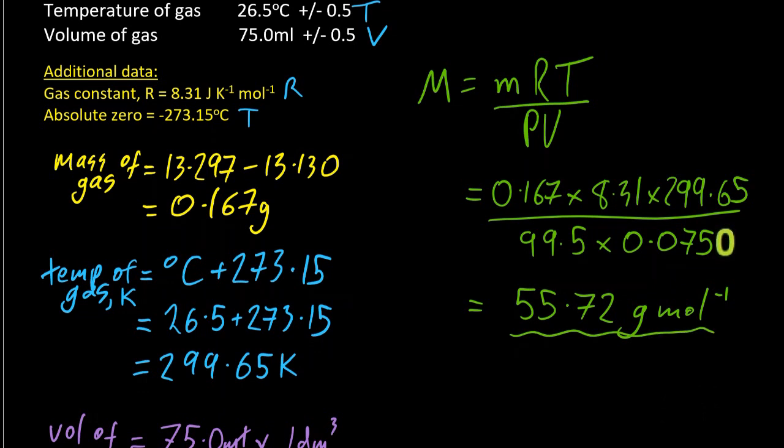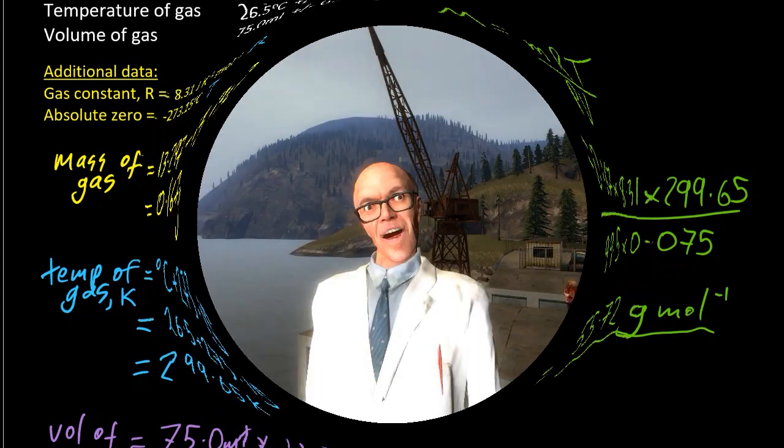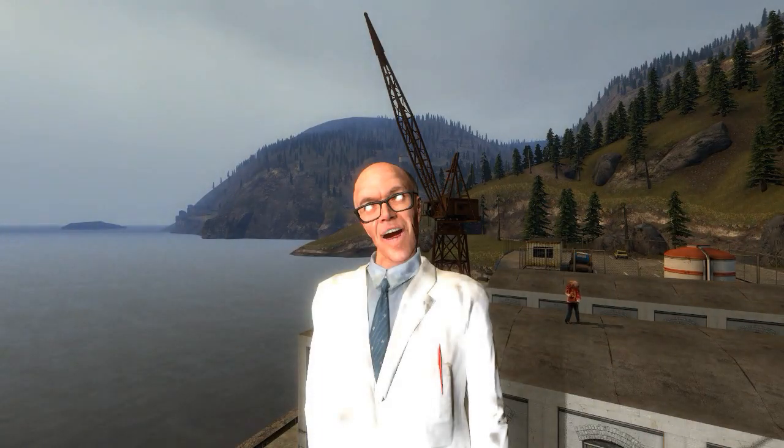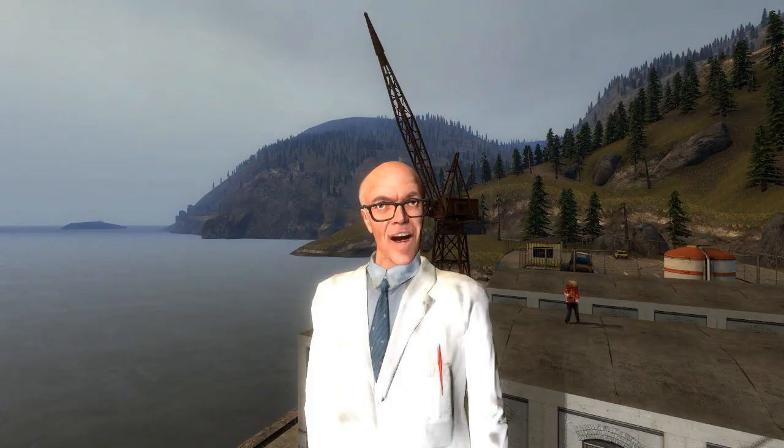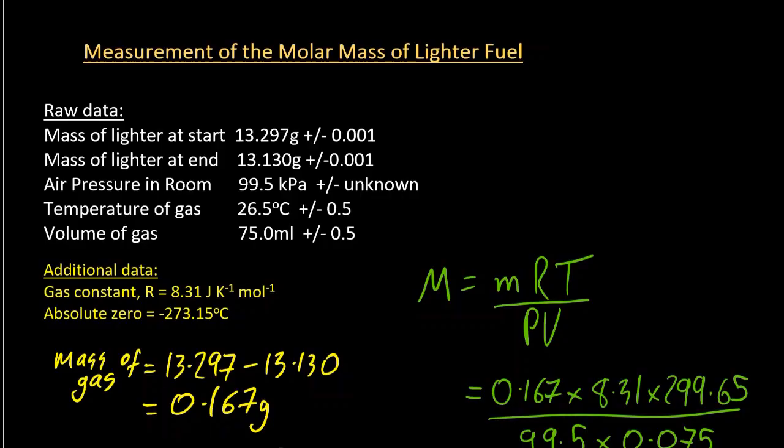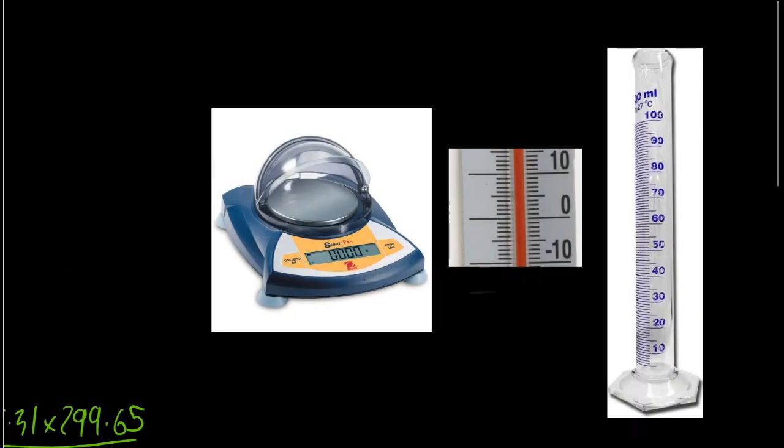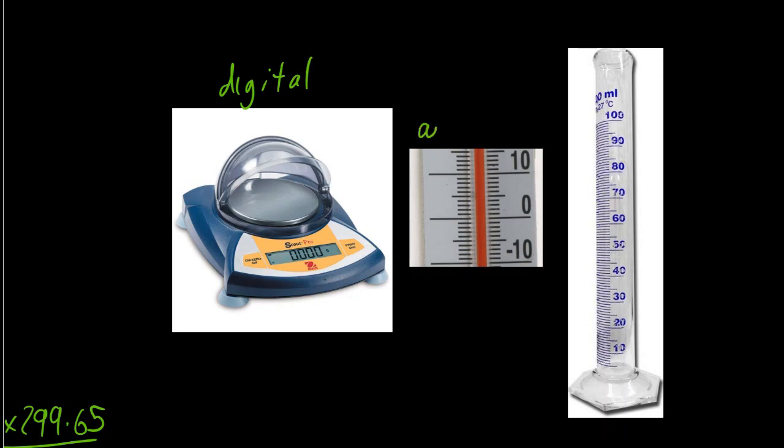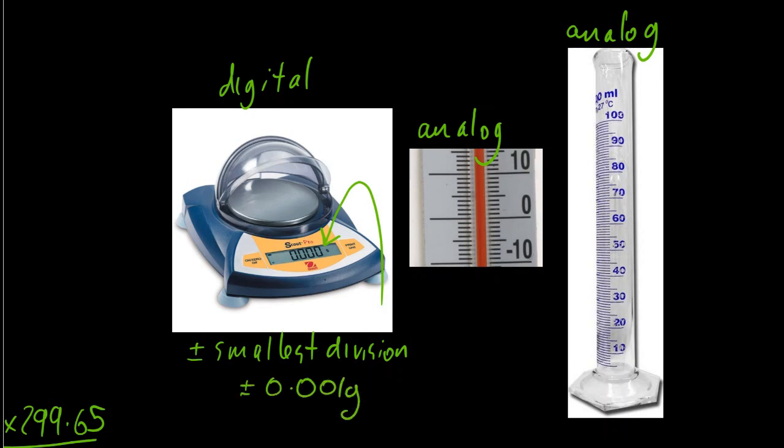Let's start by trying to look at the uncertainties and significant figures. So the uncertainties are the plus, minuses parts. It depends on the digital or analogue nature of the equipment. It has a digital display, it uses batteries or power. And the uncertainty for a digital machine is plus or minus the smallest division. In this case, a thousandth of a gram.